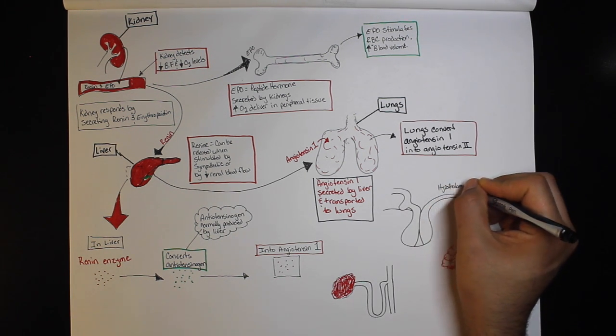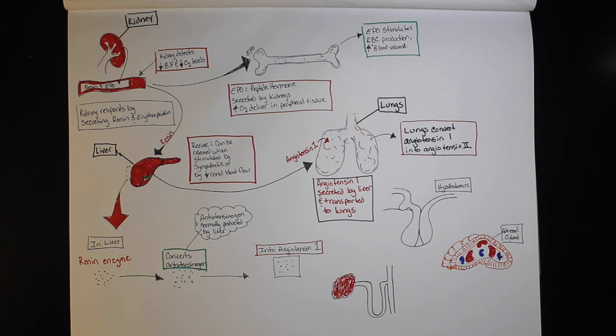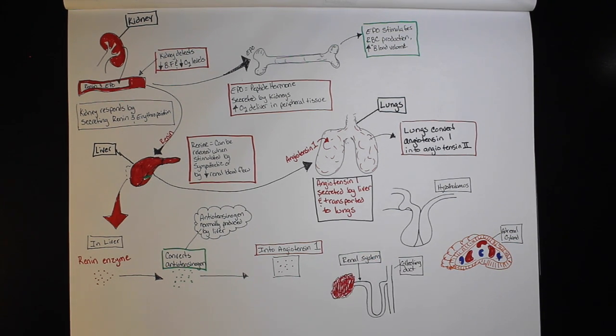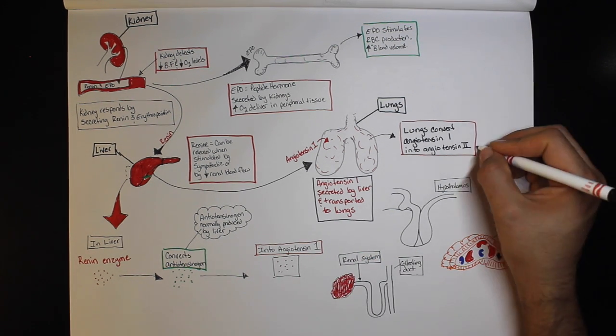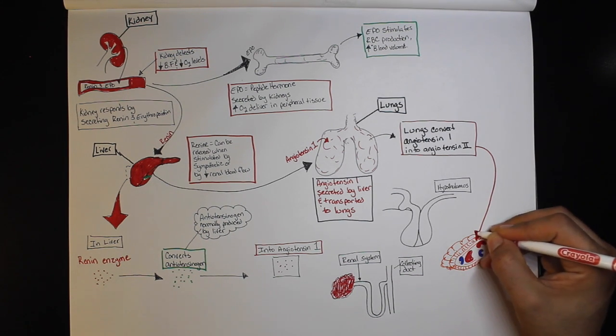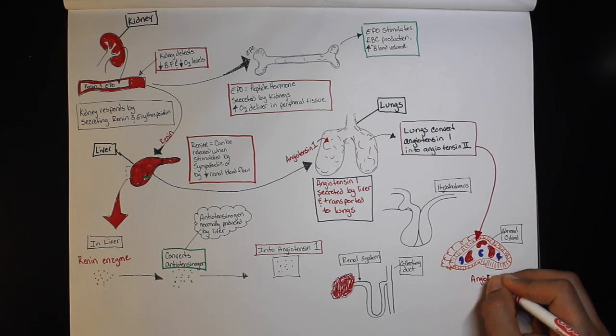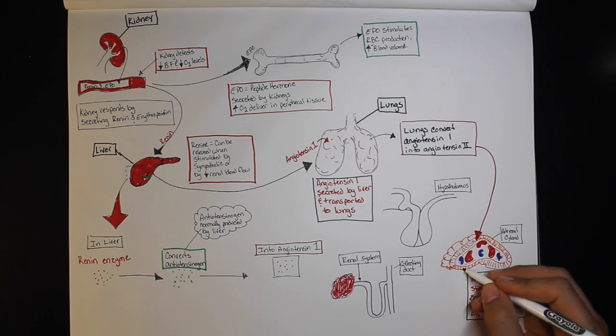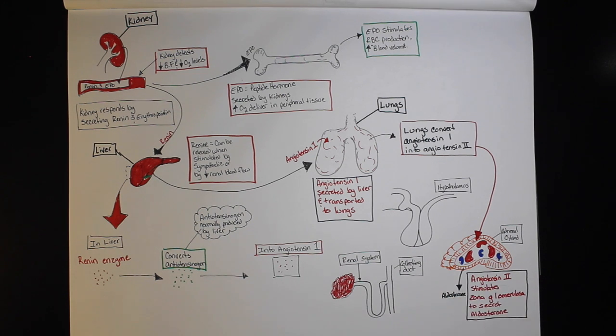ADH causes the insertion of aquaporins on specific receptors called V1 and V2. V2 receptors are located on the basolateral membrane of the collecting tubule in the kidneys. The activation of V2 receptors causes the activation of adenylyl cyclase. It acts through secondary messengers, which in turn causes the integration of aquaporins. This allows for the increased absorption of sodium and water.